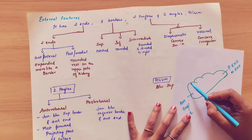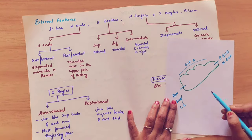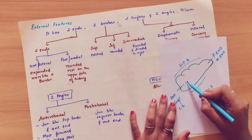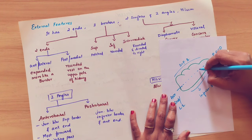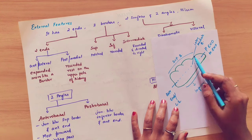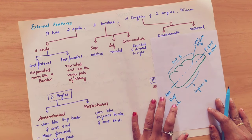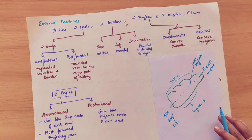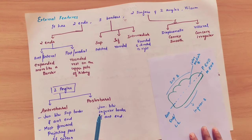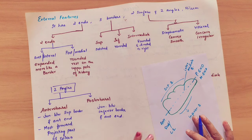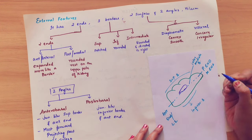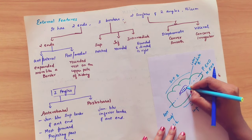Coming to the three borders: the superior border, the inferior border, and the intermediate border. The two surfaces are the diaphragmatic surface and the visceral surface — the spleen lies between the diaphragm and the stomach. There is a hilum present inside the spleen, through which the arteries, veins, and nerves pass.